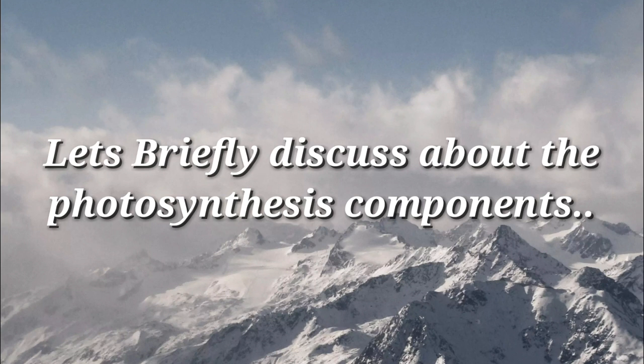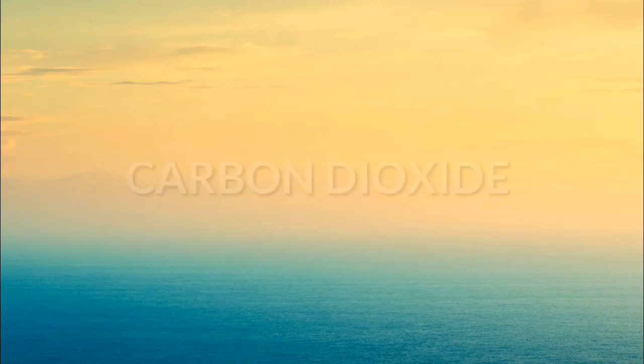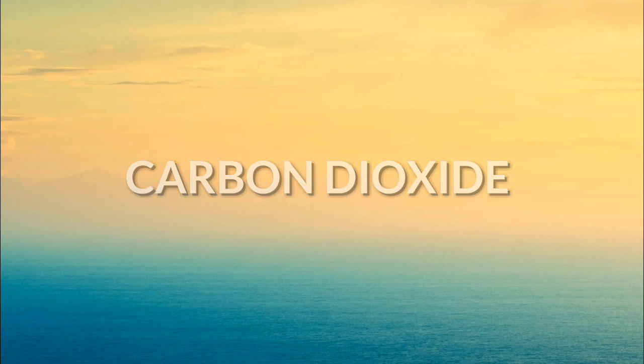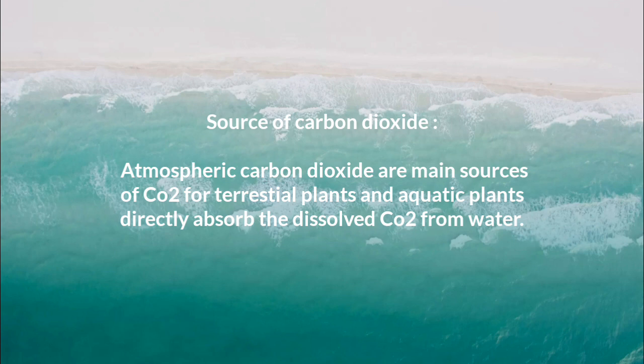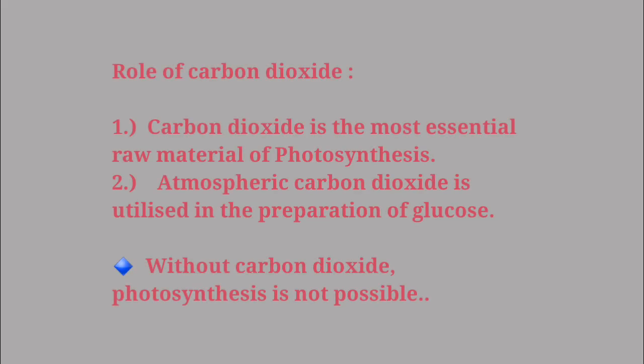Now let's talk briefly about the components and their roles in photosynthesis. The first component is carbon dioxide. It is one of the raw materials required for photosynthesis — six moles of carbon dioxide are utilized to produce one mole of glucose. The source of carbon dioxide: atmospheric CO₂ is the main source for terrestrial plants, while aquatic plants directly absorb dissolved CO₂ from water. The role of carbon dioxide: it is the most essential raw material of photosynthesis, utilized in the preparation of glucose. Without carbon dioxide, photosynthesis is not possible.